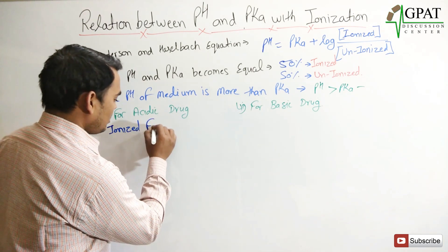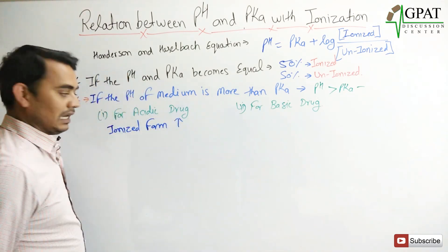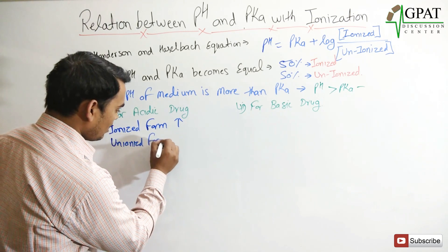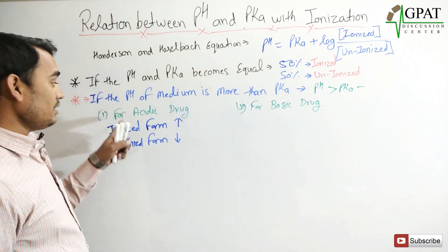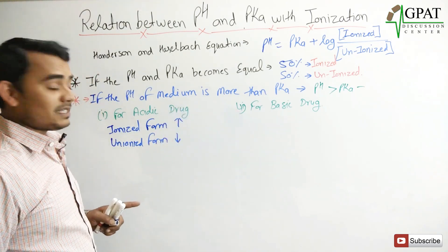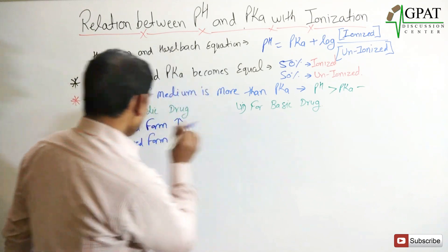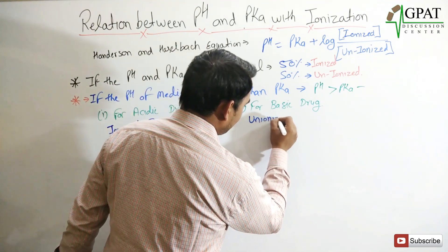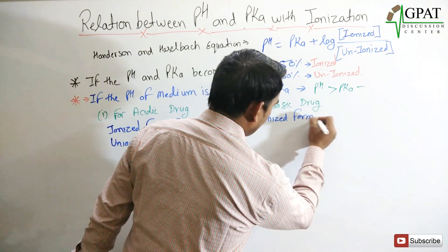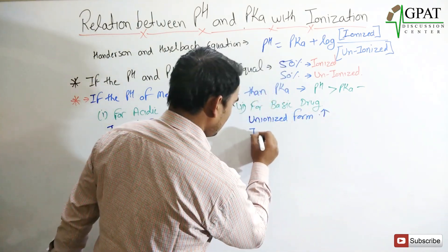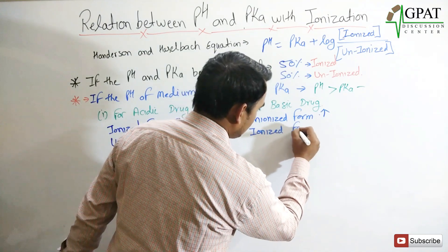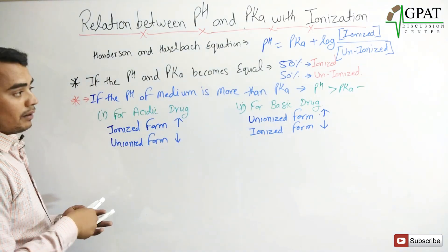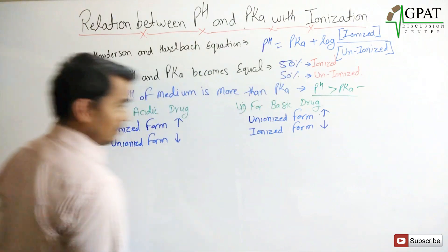When pH is greater than pKa and the drug is acidic, the ionized form increases and the unionized form decreases. When the drug is basic, the opposite occurs: the unionized form increases and the ionized form decreases.